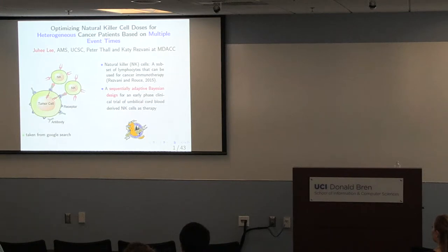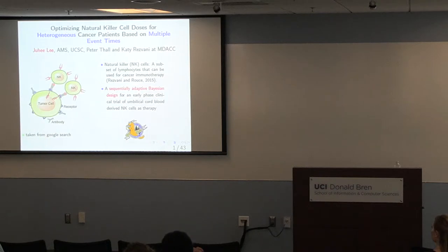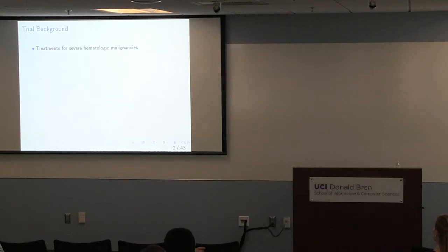Based on previous studies, we know optimal cancer cell doses may be different for different subtypes. A patient comes into a trial, we give a treatment, we follow and monitor the patient, and observe the clinical outcomes. Here we have five outcomes, which I will talk about later. So briefly, let me talk about the trial background — it involves a lot of medical terminology which I will do my best to pronounce properly.